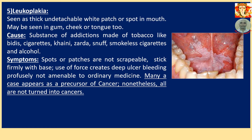Number 5: Leukoplakia. Seen as thick, undetachable white patches or spots in the mouth — may be seen on gum, cheek, and tongue. Cause: Substances of addiction made of tobacco like bidi, cigarettes, khaini, jorda, snuff, smokeless cigarettes, and alcohol. Symptoms: Spots or patches are not scrapable; they stick firmly to the base. Use of force creates deep ulcers with bleeding — not amenable to ordinary medicine. Many cases appear as a precursor of cancer, though not all turn into cancers.